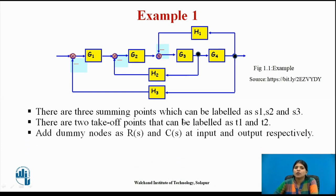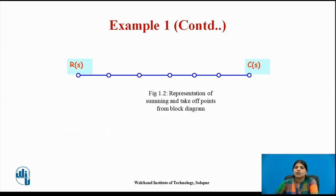Add dummy nodes as R(s) and C(s). R(s) is the input node and C(s) is at the output side. This is the representation of summing points and takeoff points from the block diagram — three summing points S1, S2, S3 and two takeoff points T1 and T2.